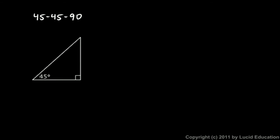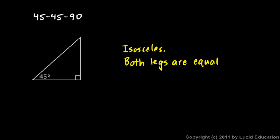We know that a 45-45-90 triangle is isosceles, which means both legs are equal. Remember, the legs are the two sides that are not the hypotenuse. An isosceles triangle by definition has two sides the same, so you can mark both legs with identical tick marks to indicate they are equal.